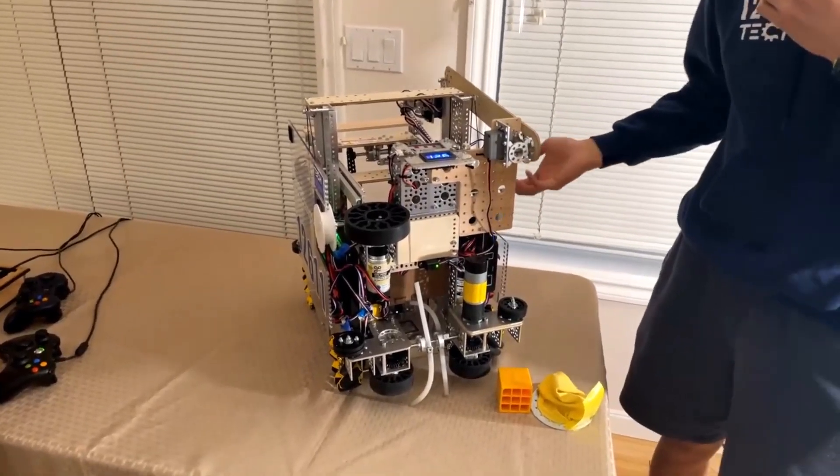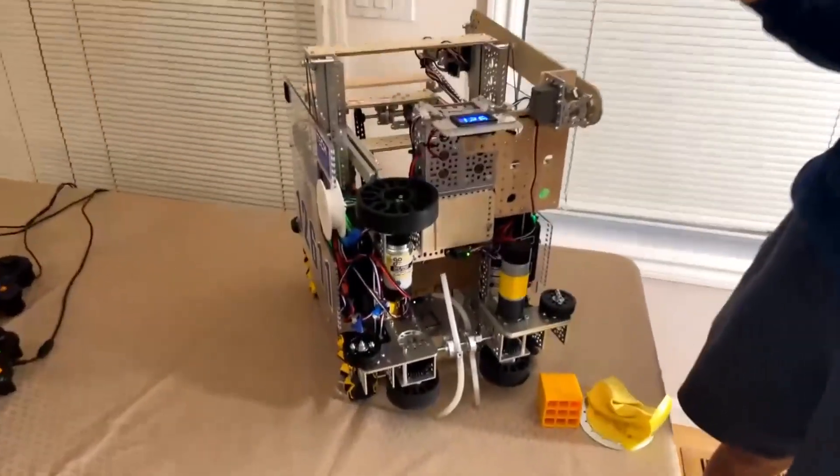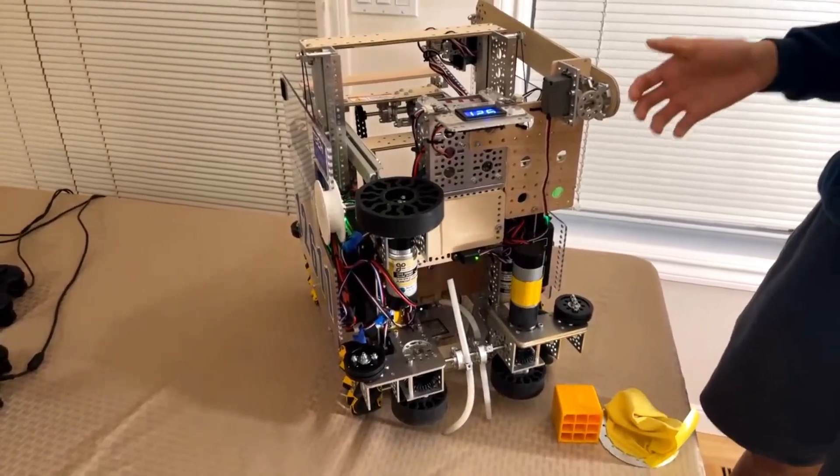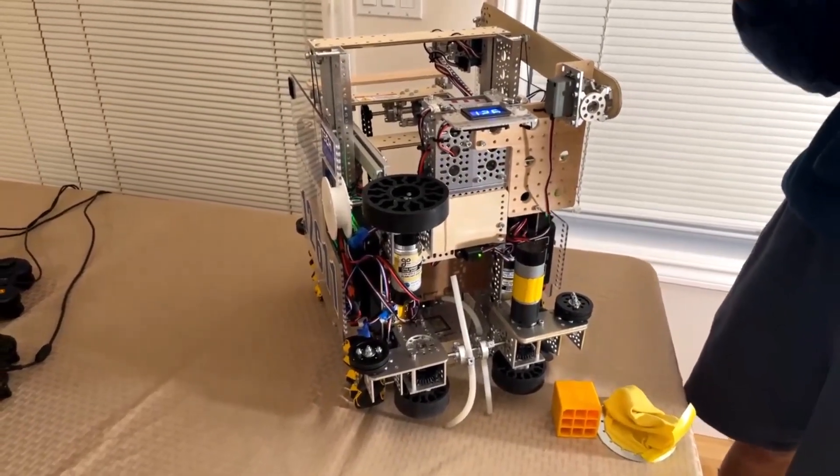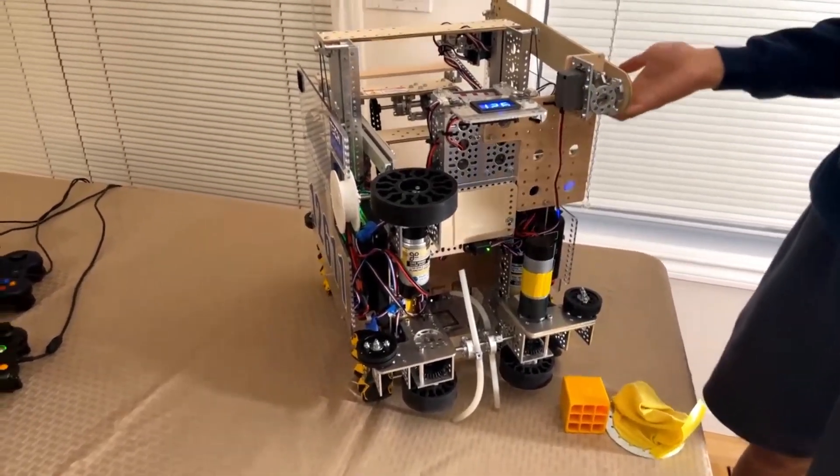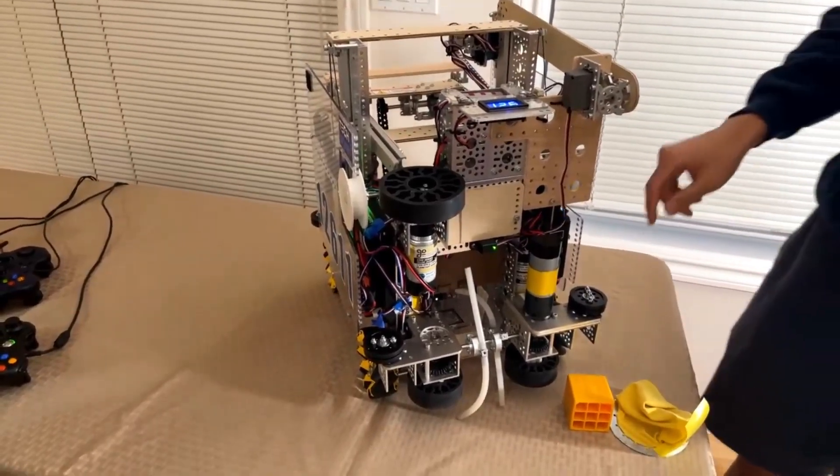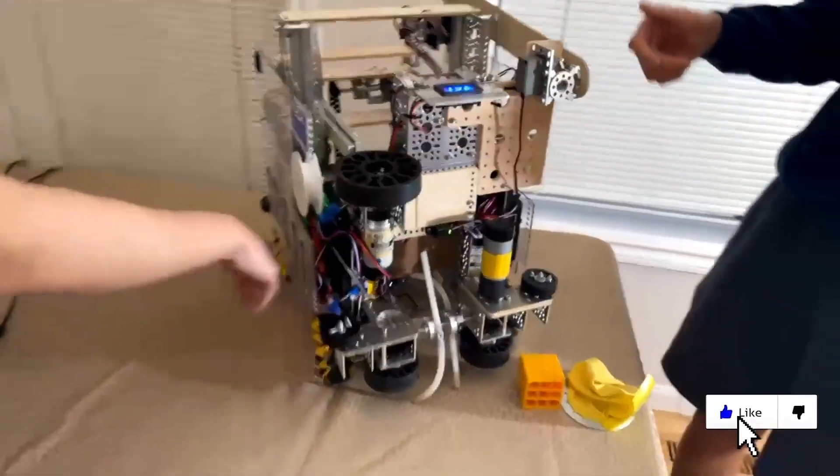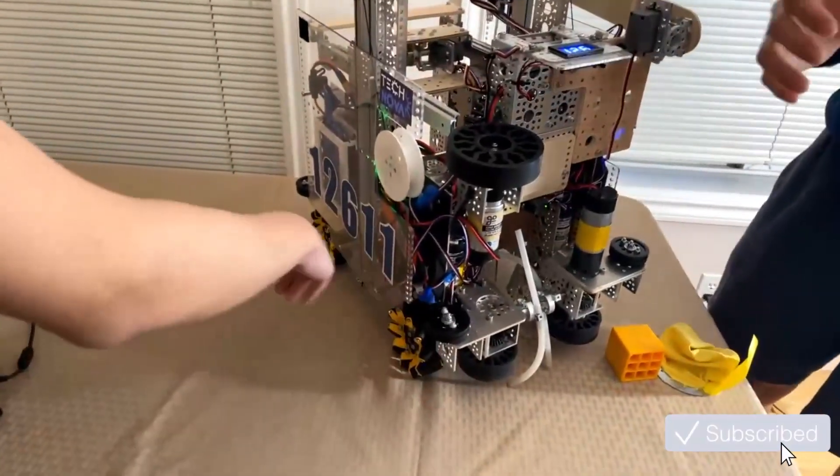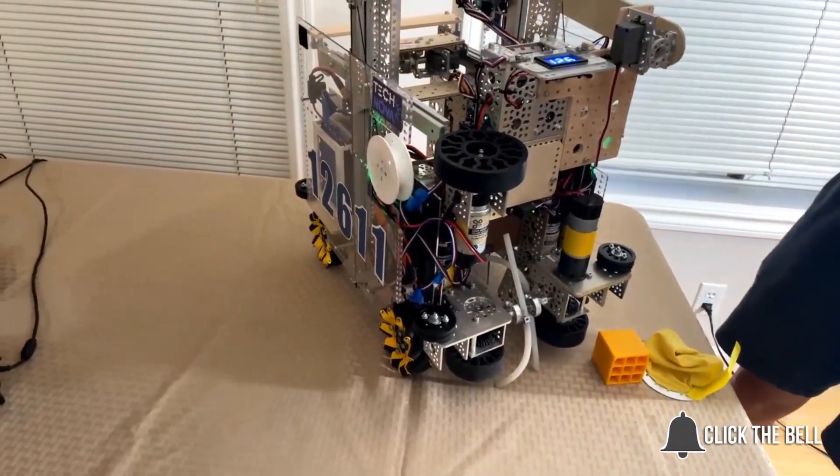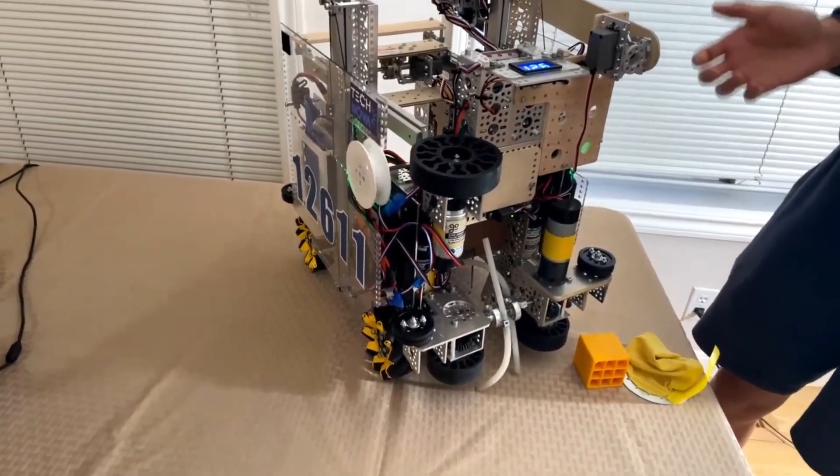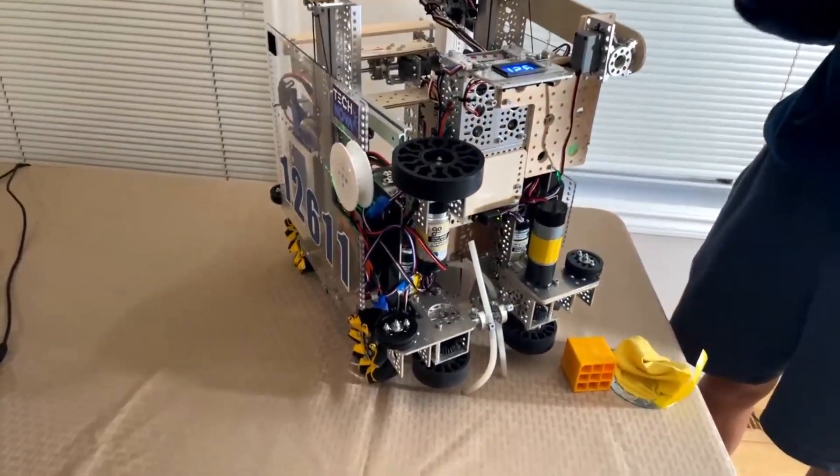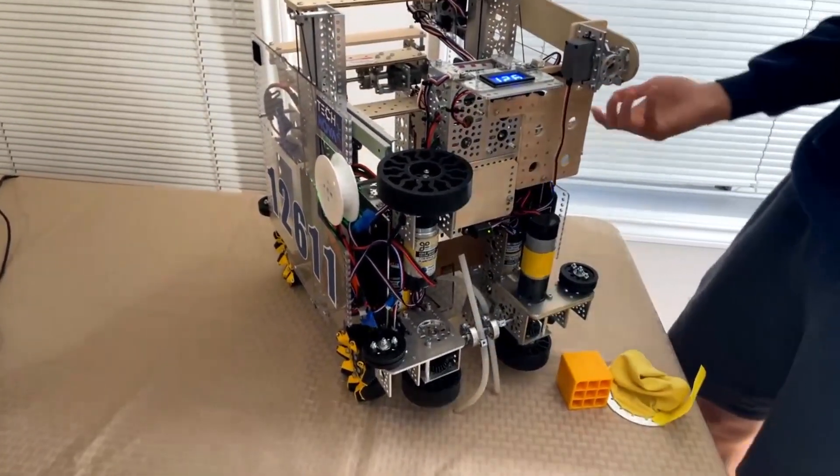So I'll start off on the drive train. Our drive train is actually a very narrow design. It's less than 13 inches, meaning that we can fit through the gap very comfortably, which is very convenient during all phases of the competition. A special feature of this drive train is actually these idler wheels. These let us just scrape along the walls very smoothly, which is very helpful during all portions of the competition because we don't have to be very careful anymore, it can just be more free-flowing.